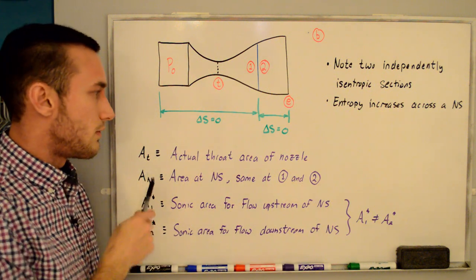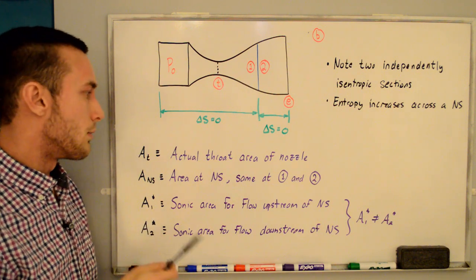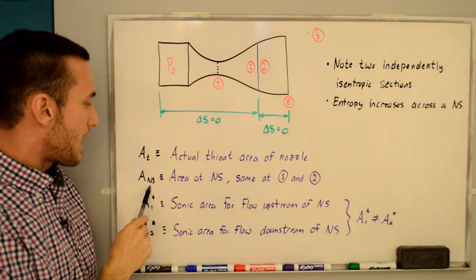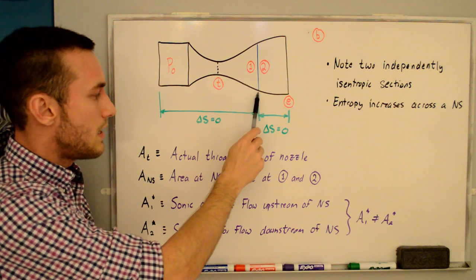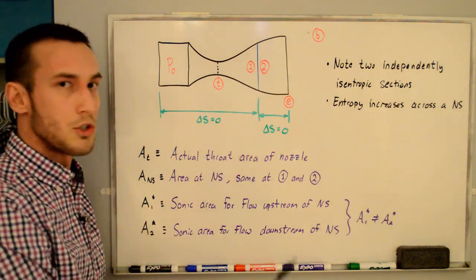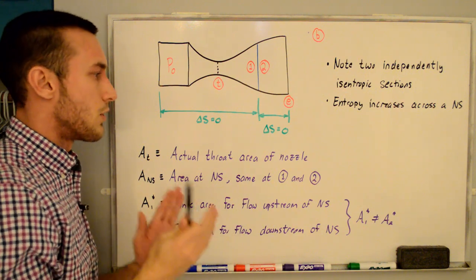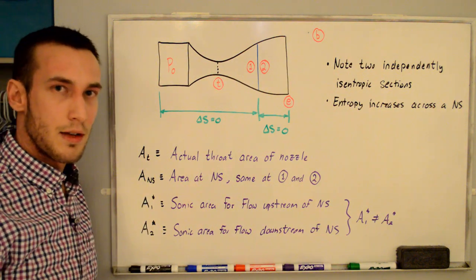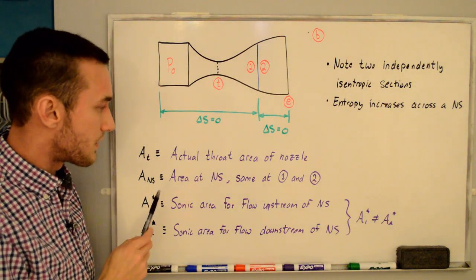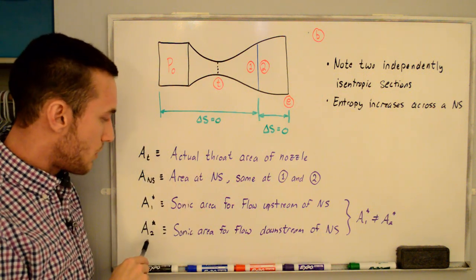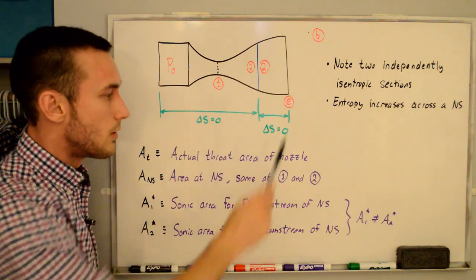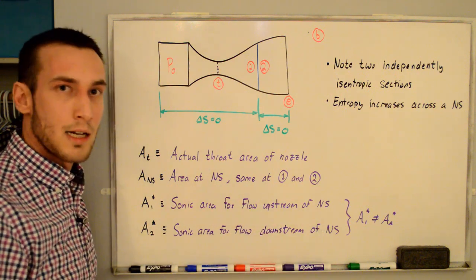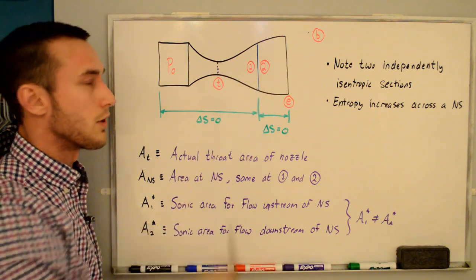Before calculations, let's go through the area definitions, as this is probably the hardest part. A sub T is the actual throat area. A sub NS is the area at the normal shock, which is the same for state 1 and state 2 since they are just upstream and downstream. A1 star is the sonic area for flow upstream of the normal shock, and A2 star is the sonic area for flow downstream. A1 star is not equal to A2 star because the flow is non-isentropic across the shock.